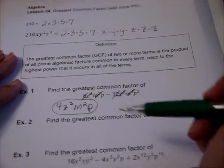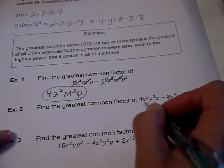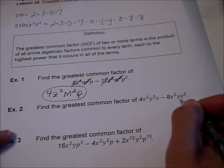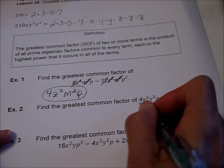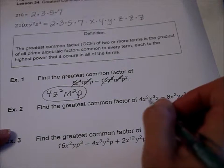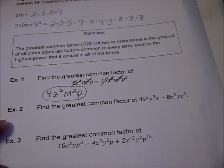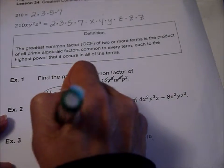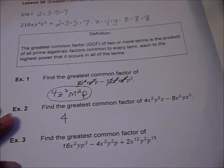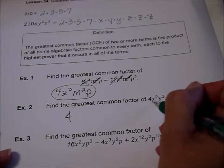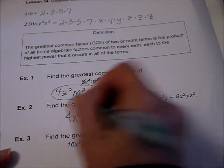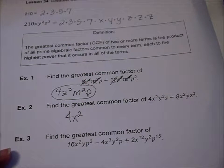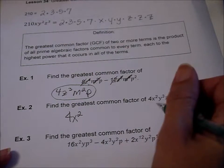Take a breath and let's go to the second one. Find the greatest common factor of 4x²y³z minus 8x²yz³. We start with the coefficient out in front. What's the biggest thing that goes into 4 and 8? 4. So we've taken care of our coefficient. What's the greatest number of x's they both have in common? x² is the highest power that occurs in both terms.